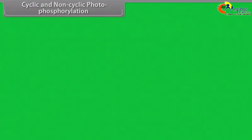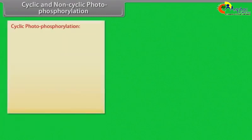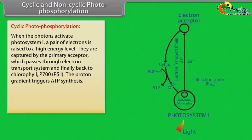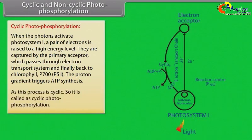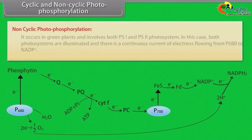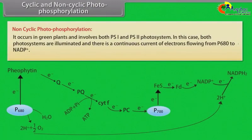Cyclic and non-cyclic photophosphorylation: In cyclic photophosphorylation, when photons activate photosystem 1, a pair of electrons is raised to a high energy level. They are captured by the primary acceptor, which passes through the electron transport system and finally back to chlorophyll P700 or PS1. The proton gradient triggers ATP synthesis. Non-cyclic photophosphorylation occurs in green plants and involves both PS1 and PS2 photosystems. In this case, both photosystems are illuminated and there is a continuous current of electrons flowing from P680 to NADP+.